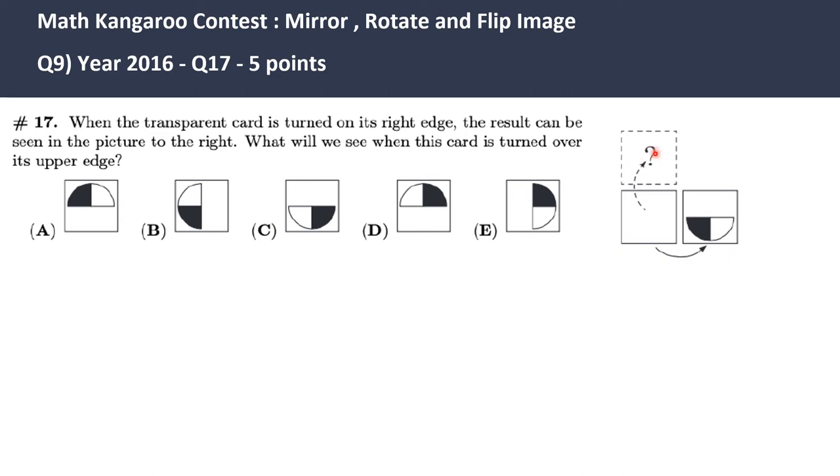So if this is put back here, upper edge, how would it look like? And we have five options. Now let's get what the implied message is from this question. Card is placed on its upper edge. That means I have to flip it vertically to put the card here.